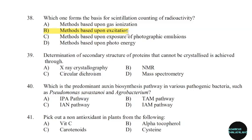39th question: Determination of the secondary structure of proteins that cannot be crystallized is achieved through. Correct answer: Option C — Circular dichroism.